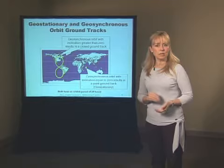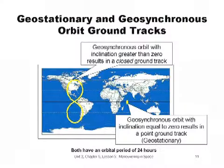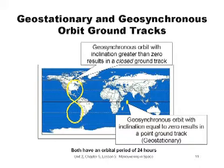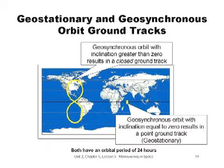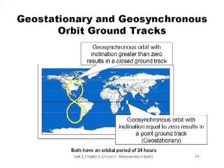Let's discuss geosynchronous and geostationary orbits in a little more detail. The circular geosynchronous orbit on the left has a 24-hour period, but it also is an inclined orbit so it can see more of Earth. It has the characteristic figure-eight shape. The ground track for the spacecraft in geostationary orbit on the right looks like a dot on the equator. That's because the spacecraft is falling around Earth above the equator at the same rate Earth is rotating. Geostationary orbits are circular with a period of about 24 hours and an inclination or tilt of zero degrees, resulting in a point ground track which is particularly useful for communication satellites.